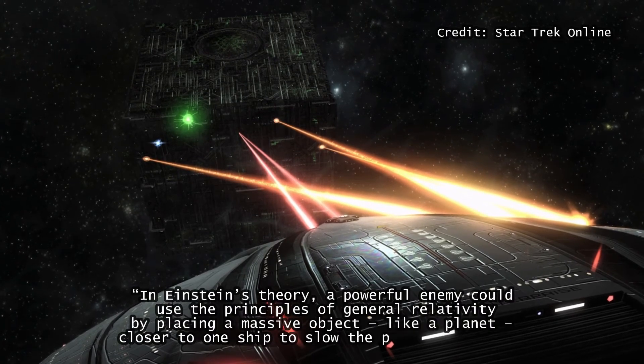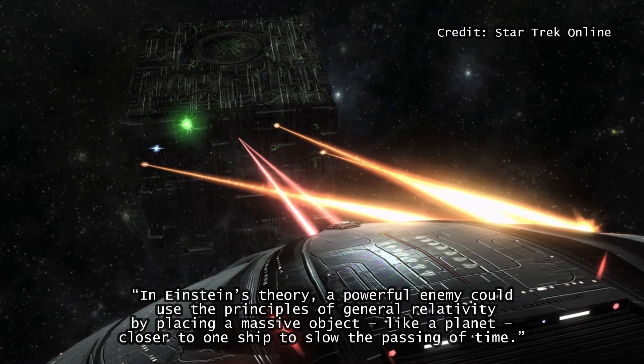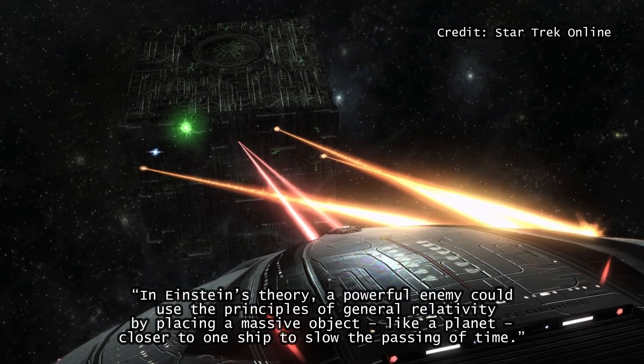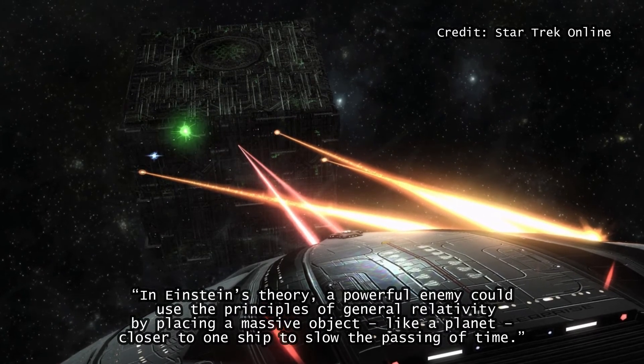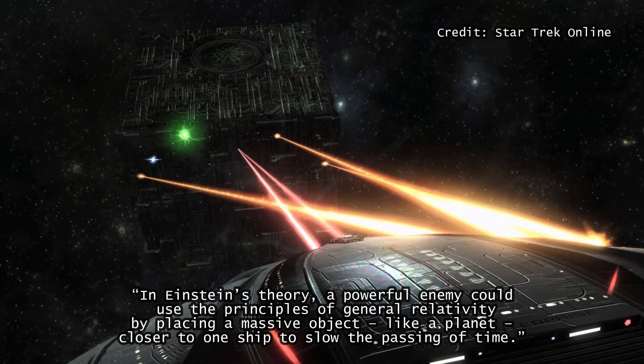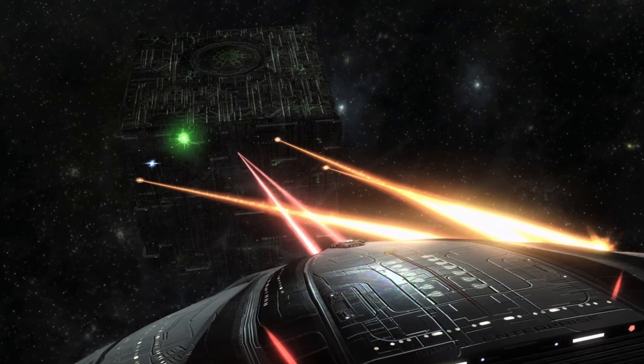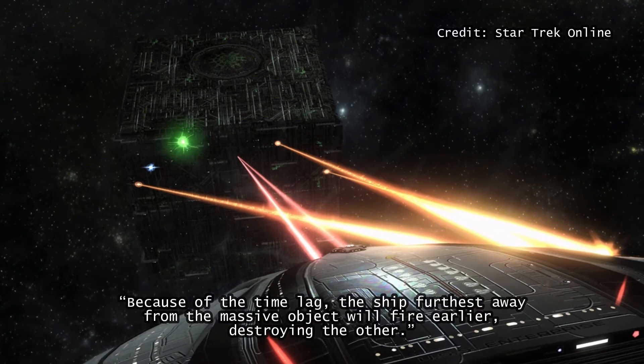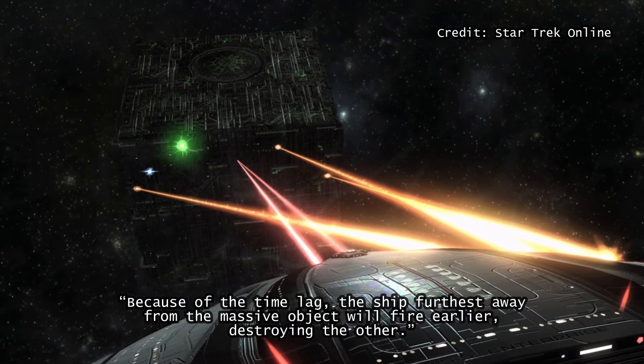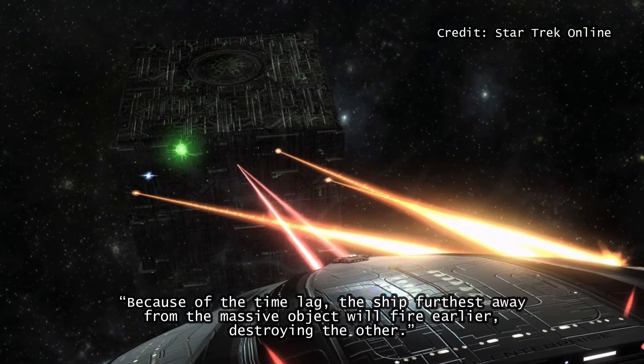In Einstein's theory, a powerful enemy could use the principles of general relativity by placing a massive object, like a planet, closer to one ship to slow the passing of time. Because of the time lag, the ship furthest away from the massive object will fire earlier, destroying the other.